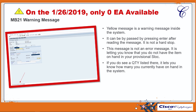The last message is not an error message — it is simply a warning message. If you see the triangle with the exclamation point on the date only zero each available, that is an MB21 warning message. Anytime you see a yellow message inside the system, it is simply a warning. Warnings can be bypassed by hitting the enter button. It is not a hard stop; it is making you aware of something.